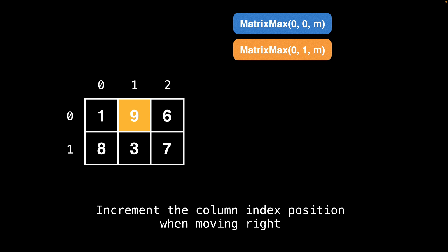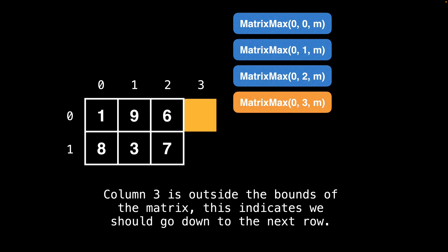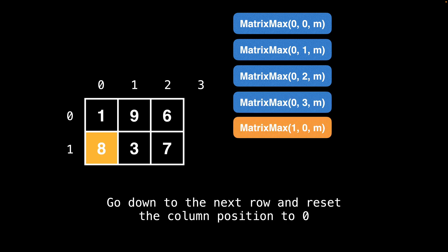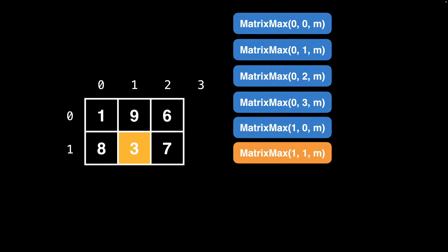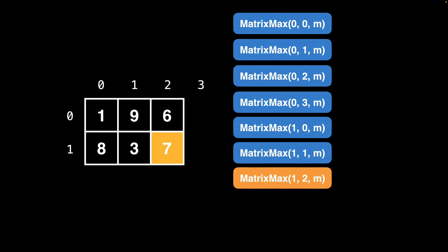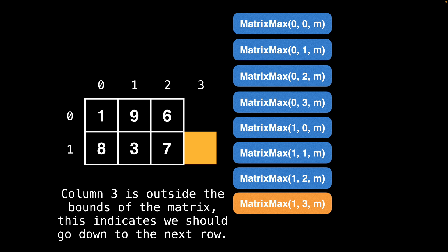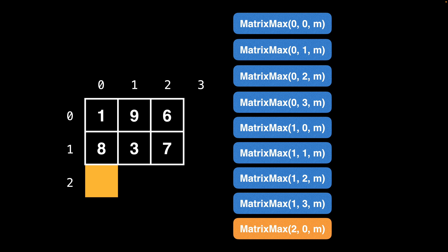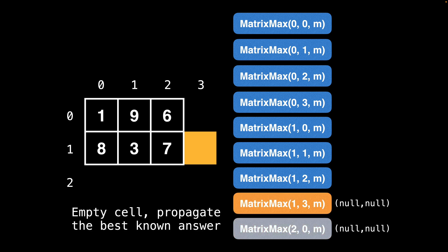Then we begin traversing to the right, incrementing the column position as we go. Eventually, the column position goes out of bounds, which indicates that we should go down to the next row. So we go down to the next row and reset the column position to zero, then keep incrementing the column index one position at a time. Then we're outside the bounds of the matrix again, which means we should go down to the next row. The recursion continues down to the next row, at which point we realize that the next row is also outside the bounds of the matrix. This is our base case that indicates that we should stop the recursion. When the row position is outside the bounds of the matrix, return null, null to indicate that there is no best maximum element yet. Returning up the stack to the last position, since this is also an empty cell, propagate the best known answer, which is currently still null, null.